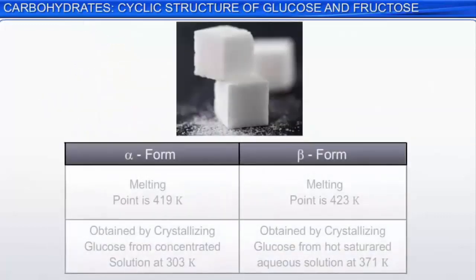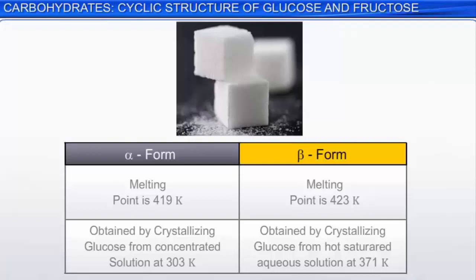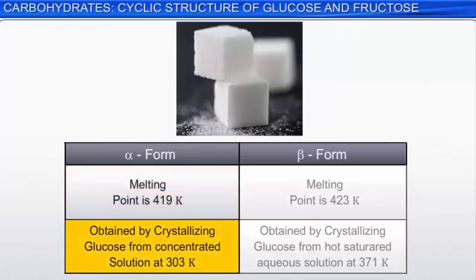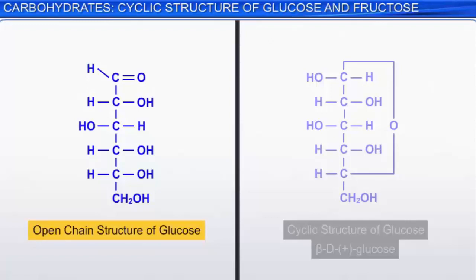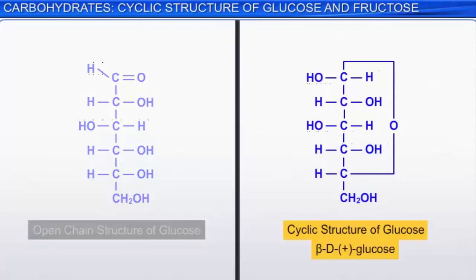Another observation is that glucose is found to exist in two isomeric forms: alpha and beta. The alpha form has a melting point of 419 Kelvin; it is obtained by crystallizing glucose from a concentrated solution at 303 Kelvin. The beta form has a slightly higher melting point of 423 Kelvin and is obtained by crystallizing glucose from a hot saturated aqueous solution at 371 Kelvin. In order to explain these observations, which are not consistent with the open chain structure, a ring structure was proposed for glucose.